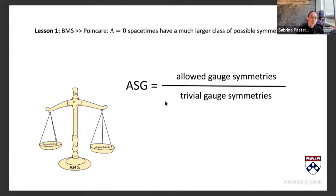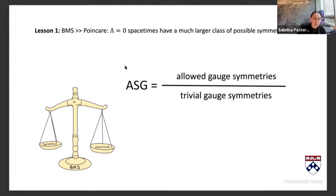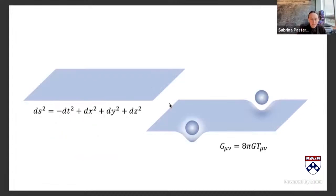The story goes back to the 1960s, where Bondi, van der Burg, Metzner, and Sachs were looking at a class of asymptotically flat spacetimes, trying to understand the phase space and how they might land on just the Poincaré group when looking at diffeomorphisms that preserve that class of falloff. If they didn't want to kill radiation, they ended up with something larger — which was a pleasant surprise.